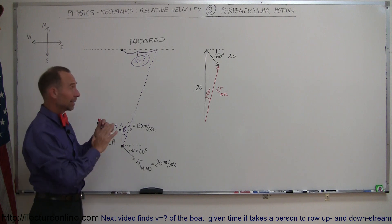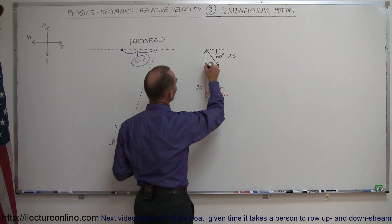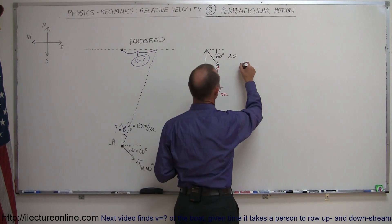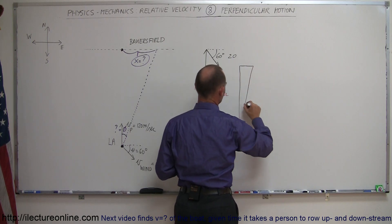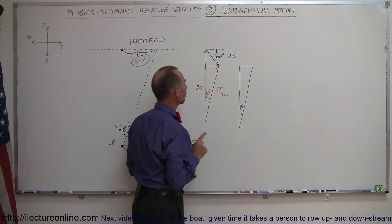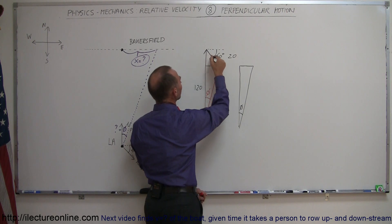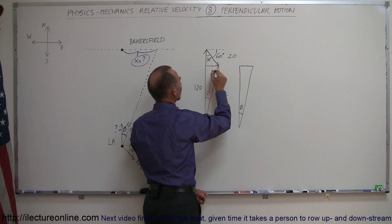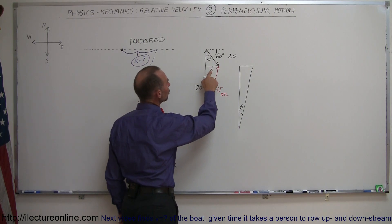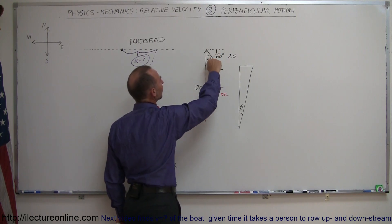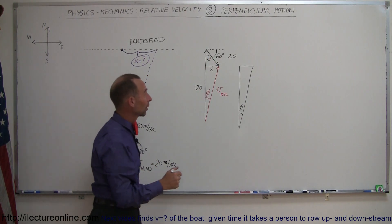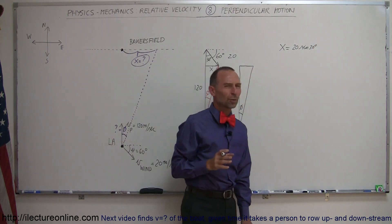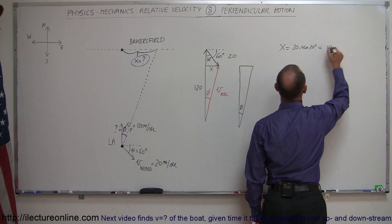We need to construct a right angle triangle because the current setup doesn't work directly. If we draw a line going directly across, we can figure out the sizes of the triangle's sides. This side is opposite to the 30-degree angle, so we call it x. x equals the hypotenuse (20) times sine of 30 degrees. Since sine of 30° is 1/2, x equals 10.